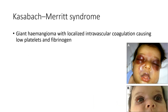Next is Kasabach-Merritt syndrome. It is characterized by giant hemangioma — which can involve the orbits — with localized intravascular coagulation causing low platelets and fibrinogen. Clinical images show orbital hemangiomas.